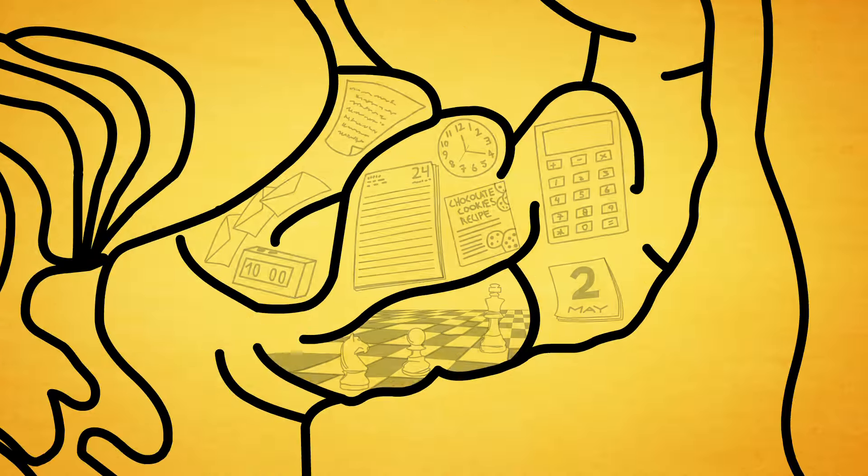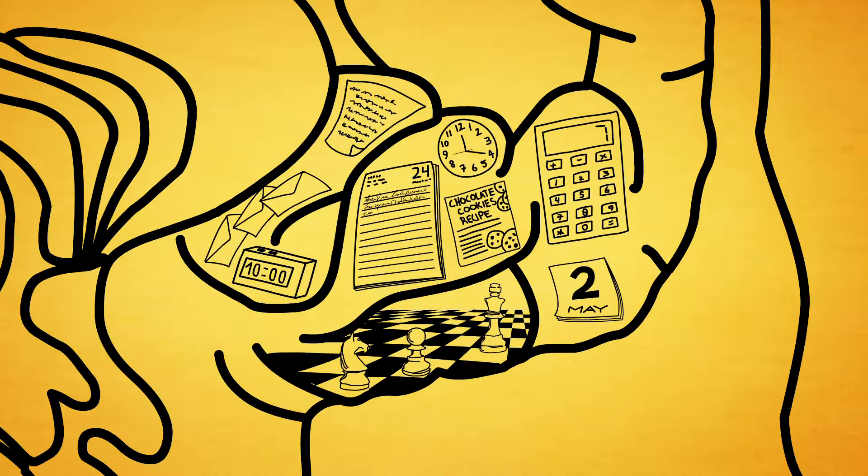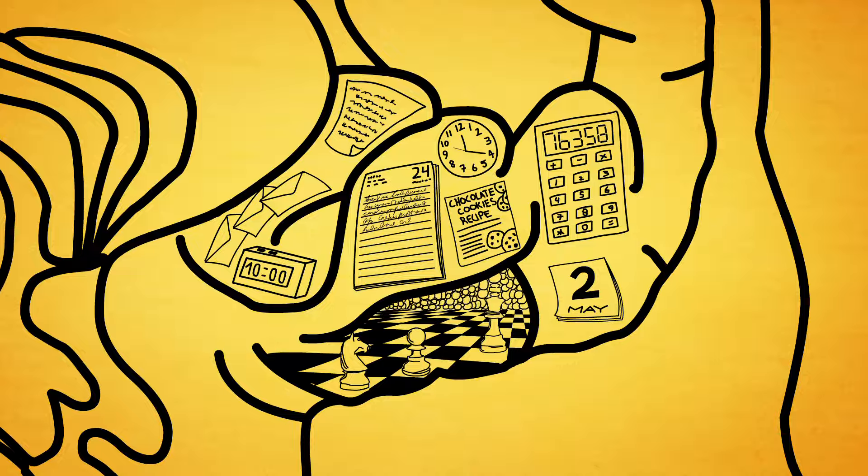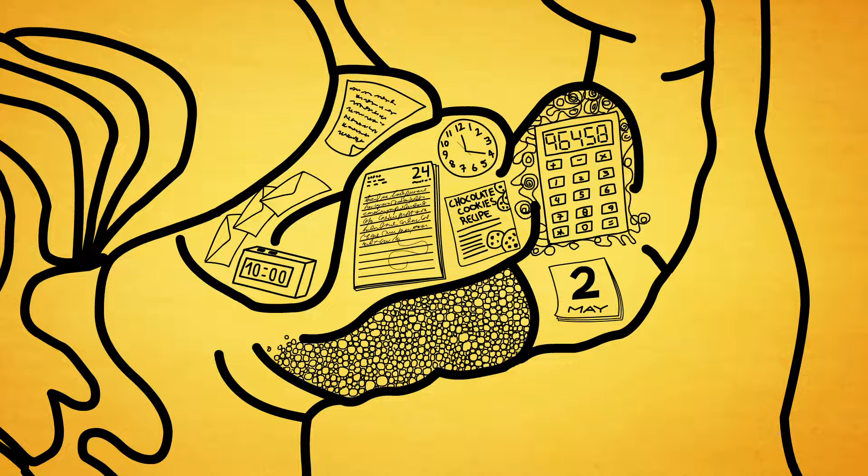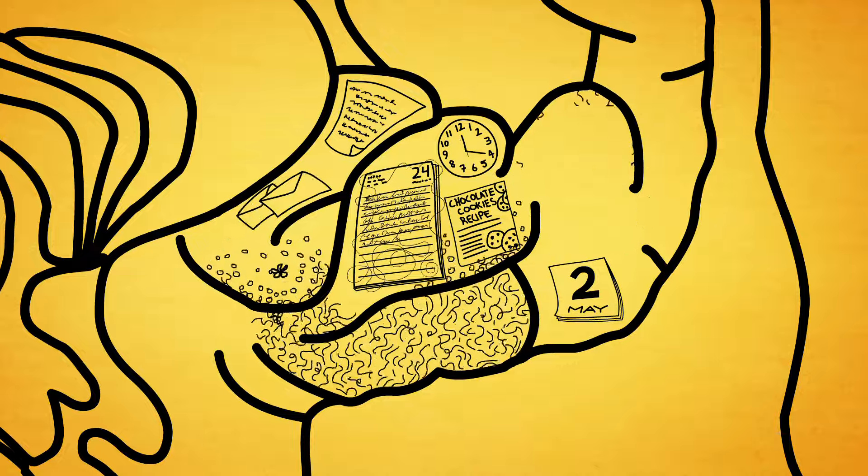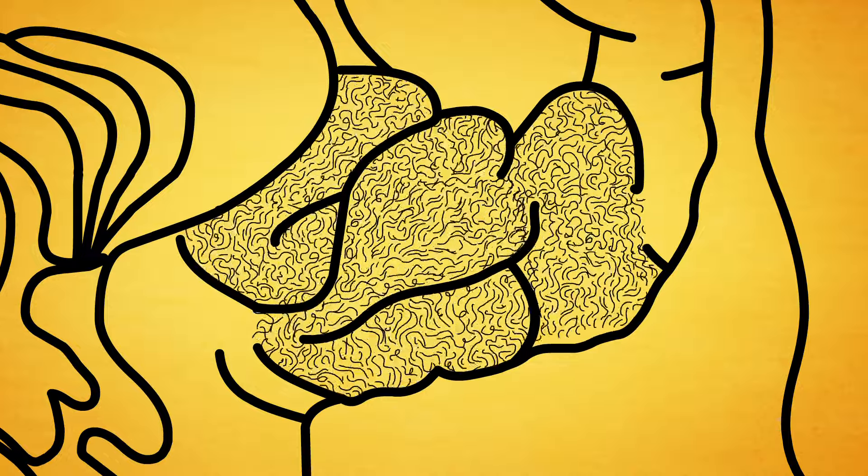Next, the disease creeps toward the front of the brain, where logical thought takes place. Very gradually, a person begins to lose the ability to solve problems, grasp concepts, and make plans.